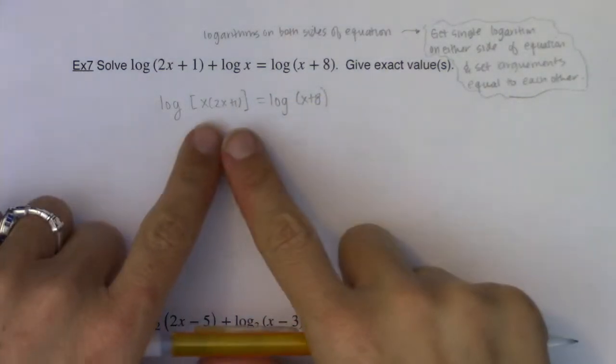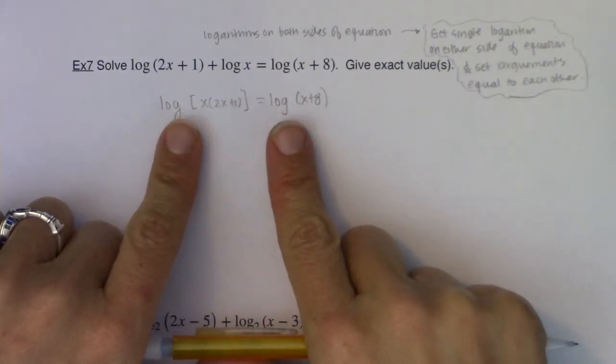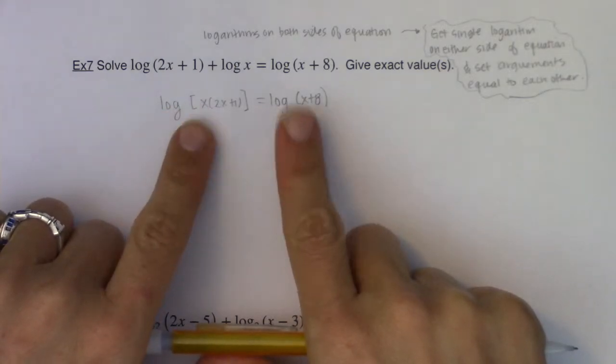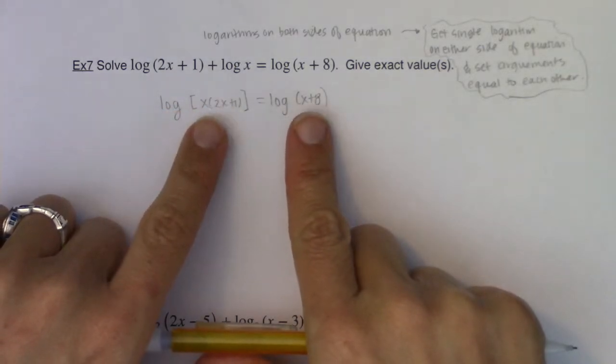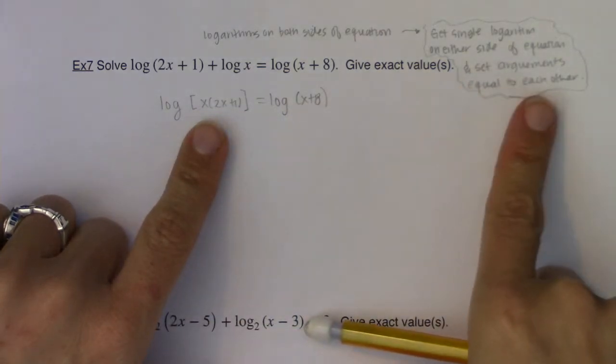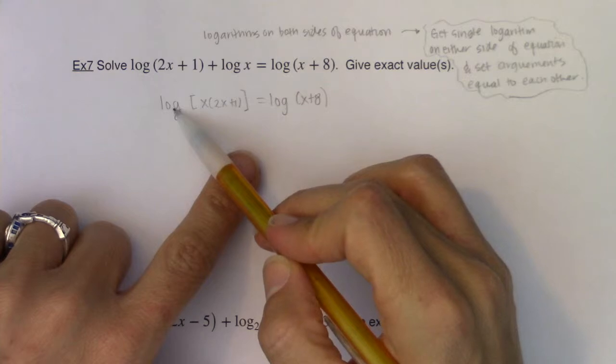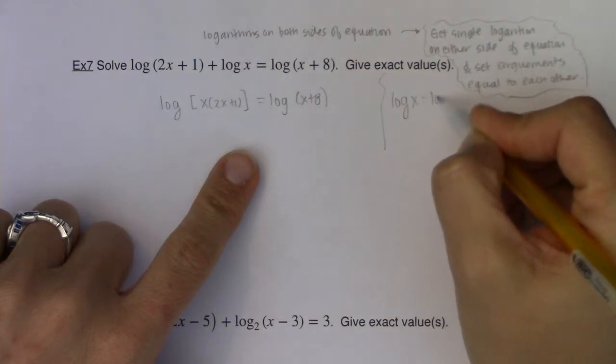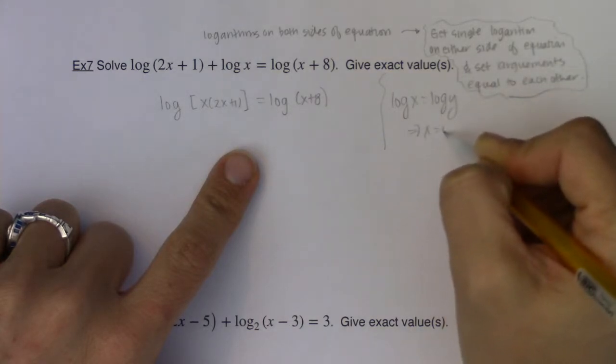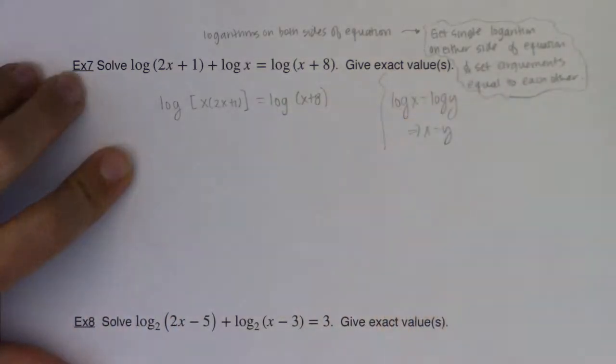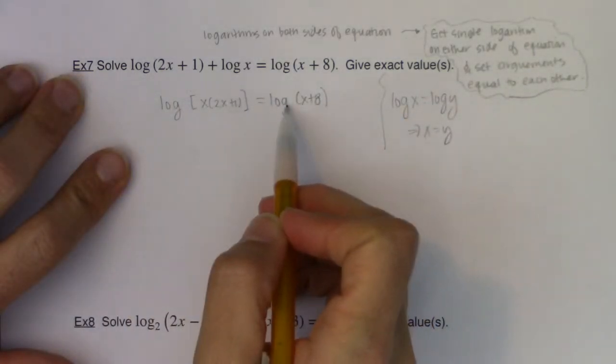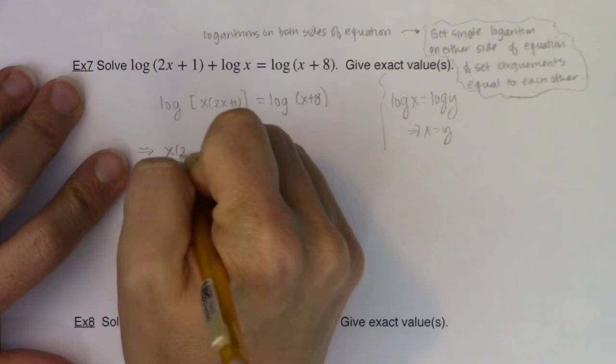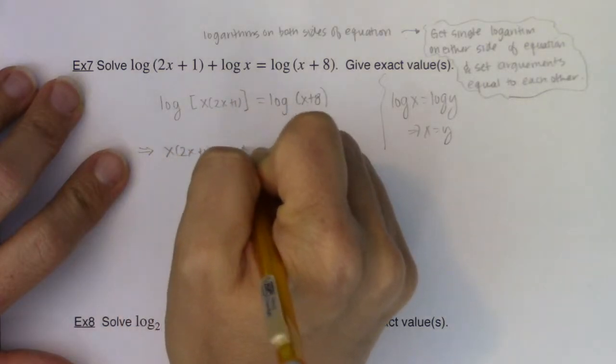And what happens is if you have two expressions that are equal to each other, and you've got logarithms on both of them, if these two expressions are equal to each other and they're both logged, then the arguments have to be the same. All right? So we're going to just set the arguments equal to each other because now I have a single logarithm over here and a single logarithm over here. And you can imagine if I had log of x equaling log of y, well, then x has to be equal to y. And that's what we're about to do. Since these are both logarithmic expressions and they're the same base, their arguments have to be the same. So I know from here that x times (2x + 1) is equal to x plus 8.